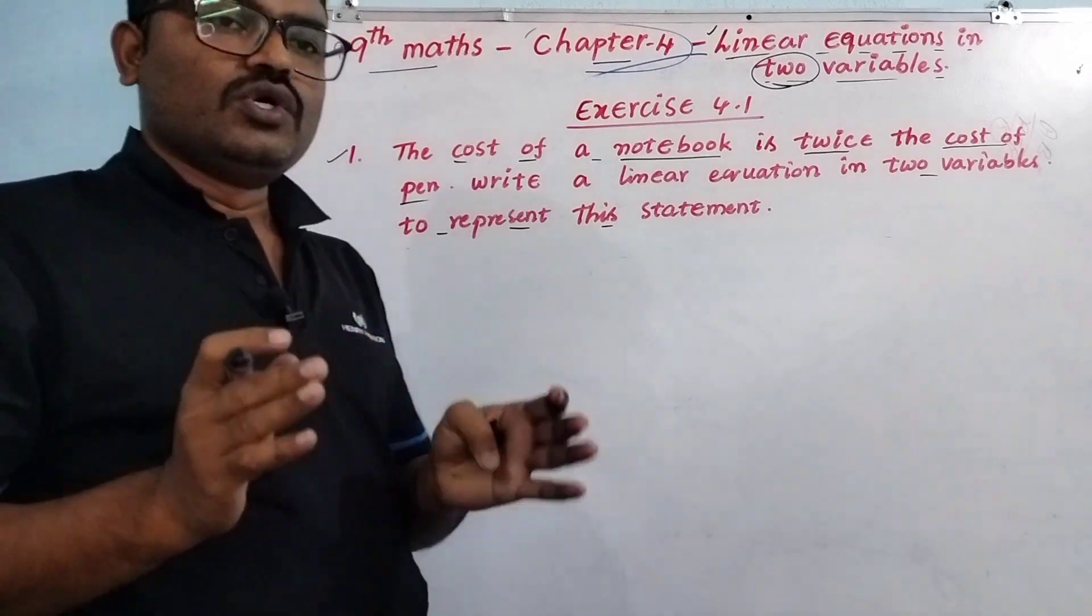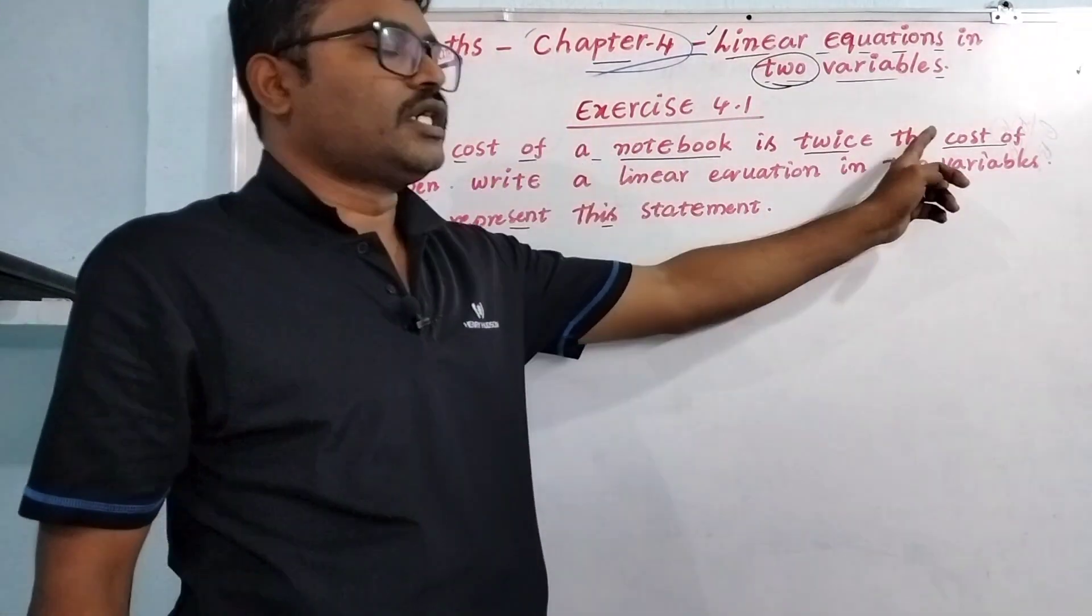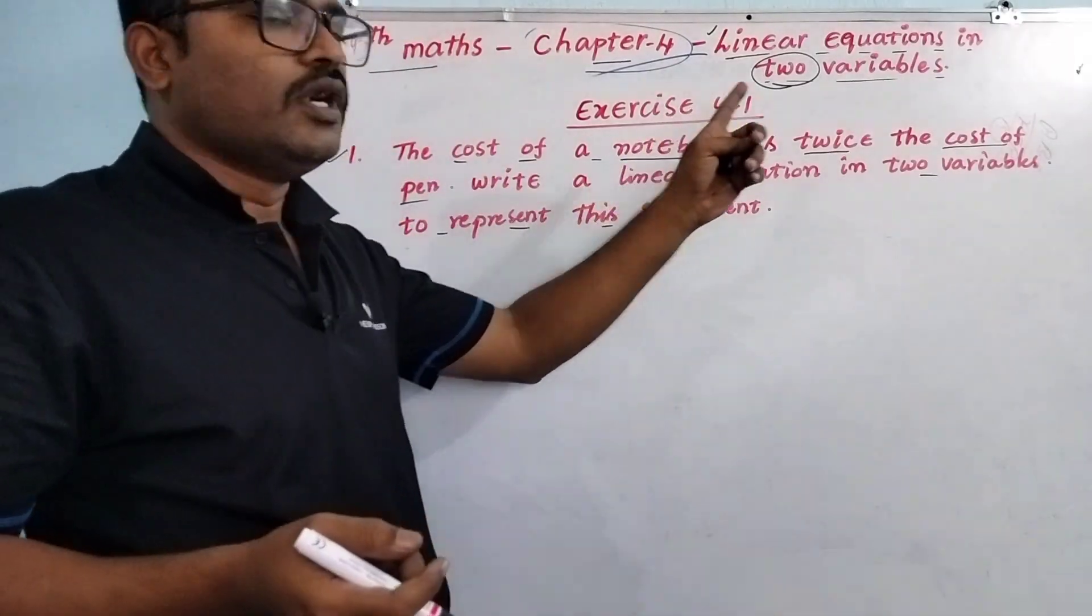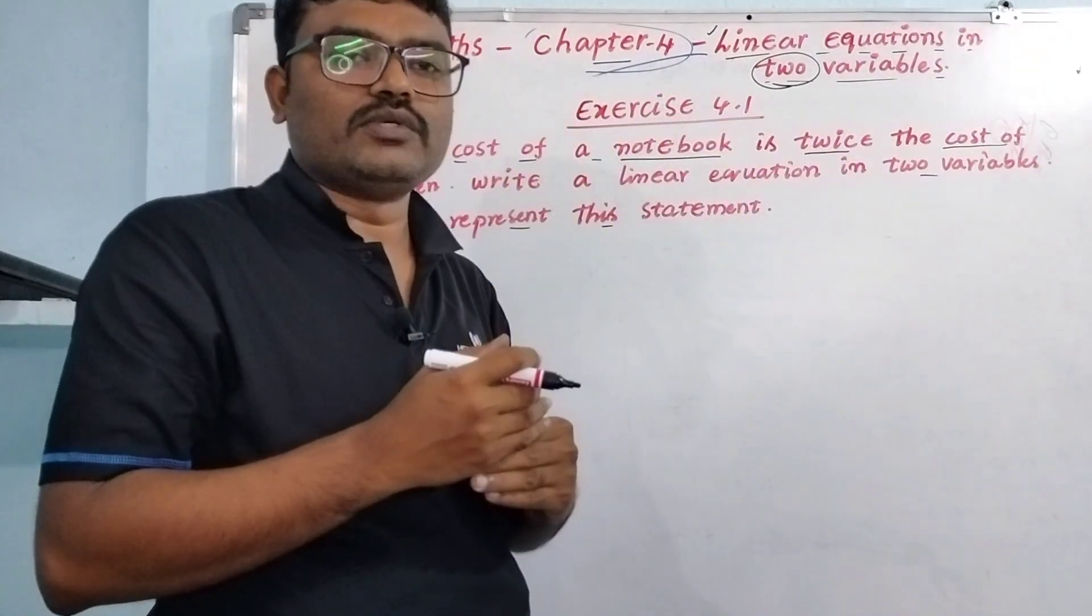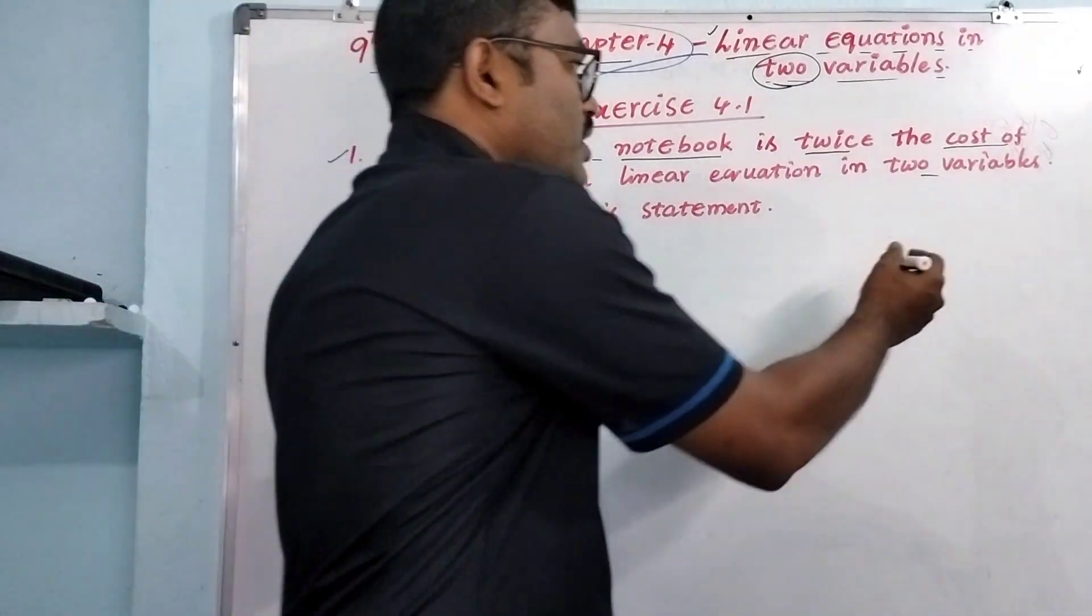See, here are two unknown values: one is the cost of notebook and the cost of pen. But the cost of notebook is double the pen cost. The pen as is, the notebook is exactly double.